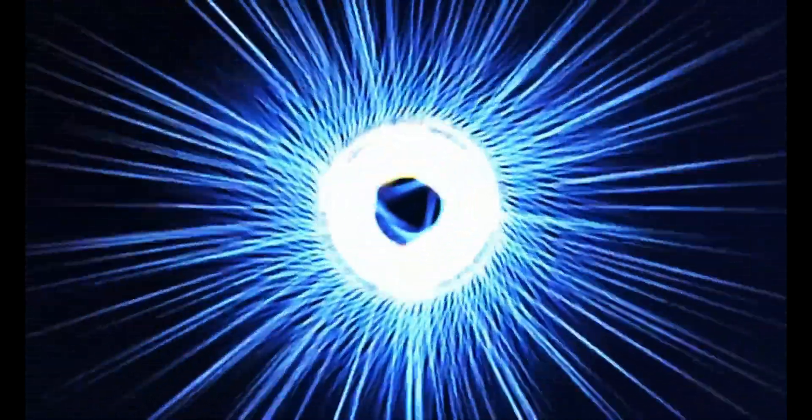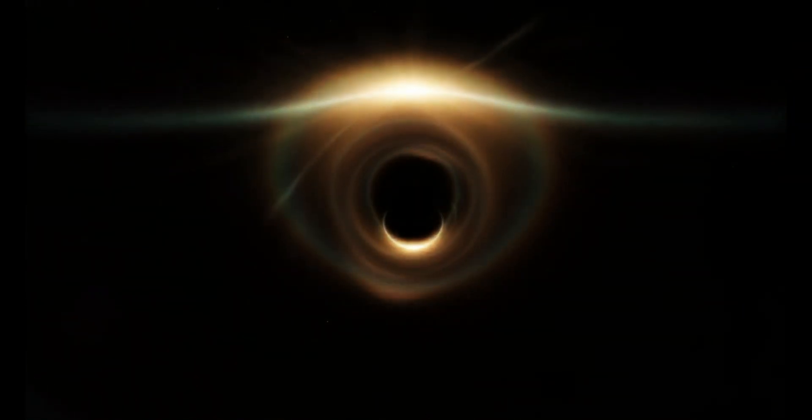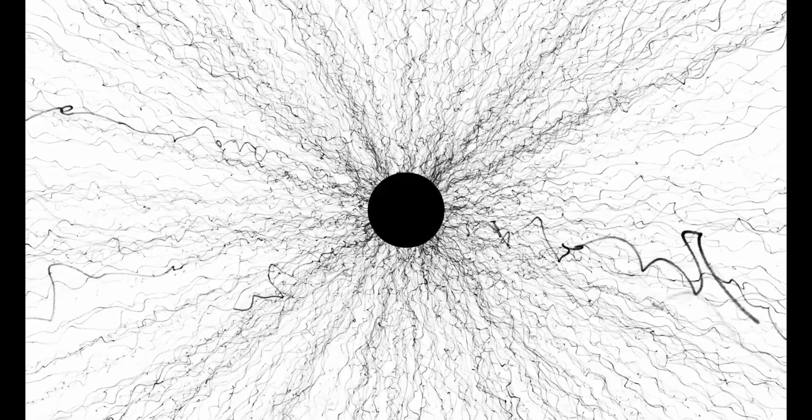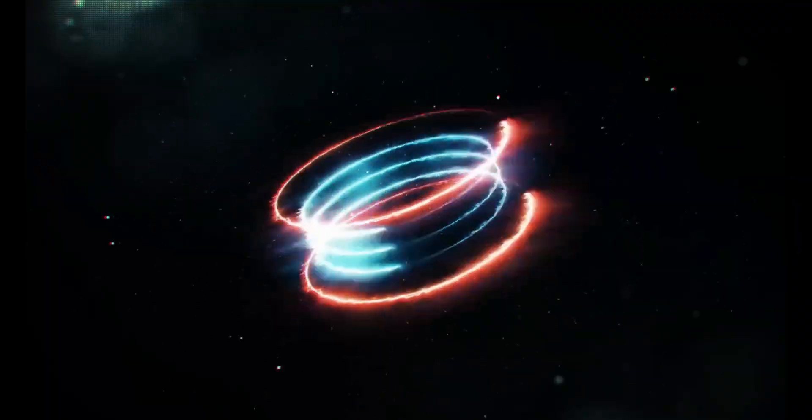However, let's suppose we somehow managed to create a large number of microscopic black holes simultaneously on Earth, and they started consuming the planet. Despite their small size, each microscopic black hole would have a mass of about 100 tons. Nevertheless, they would still be unable to consume even a bacterium.